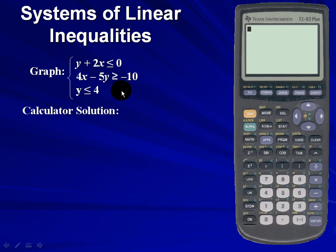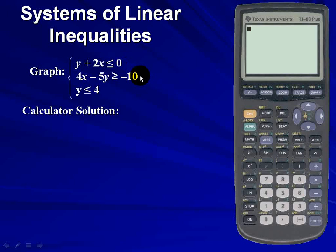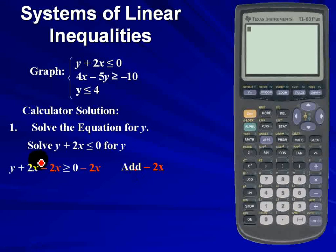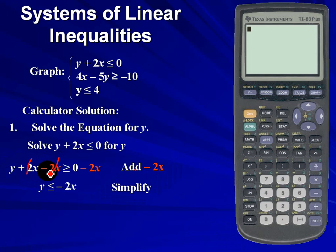Since we're using the graphing calculator, each equation must be solved for y, so we must solve the first and second equations for y. For the first equation, we add negative 2x to both sides so that the x variable on the left cancels out. Simplifying gives us y is less than or equal to negative 2x.